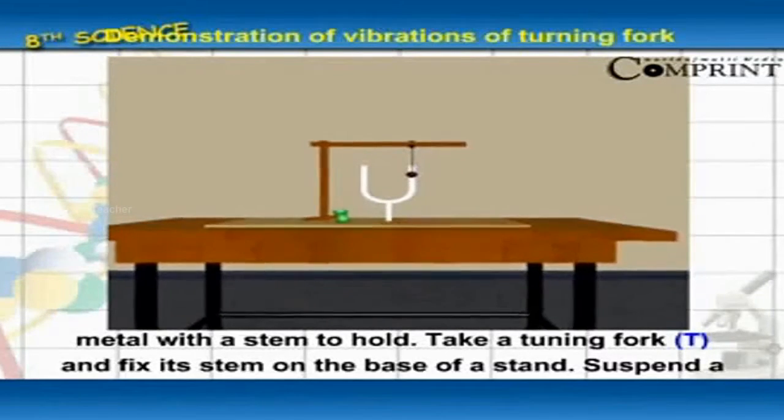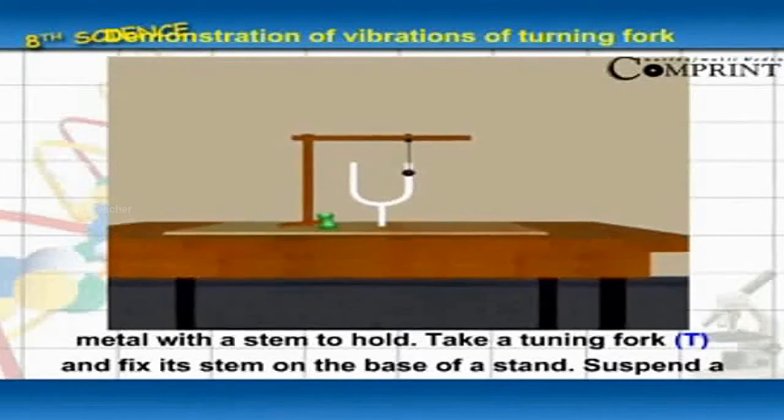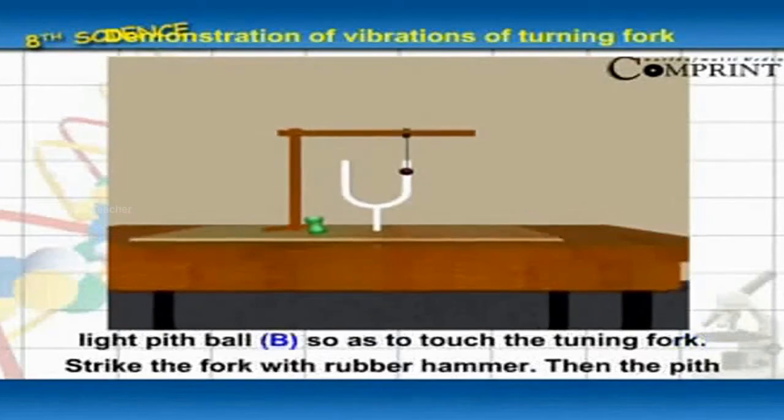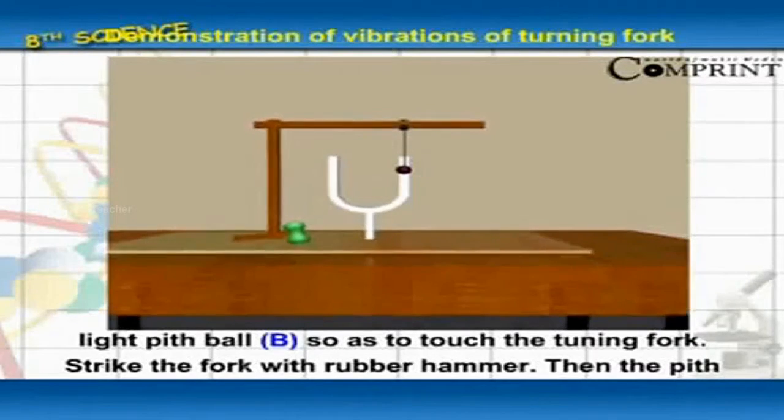Take a tuning fork T and fix its stem on the base of a stand. Suspend the light pit ball B so as to touch the tuning fork.